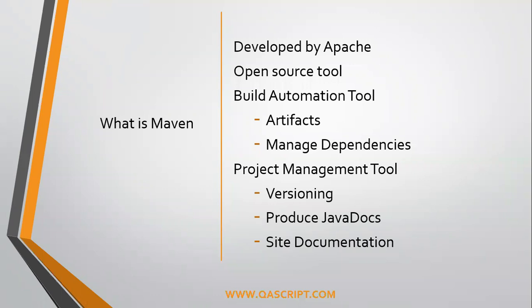Maven was developed by the Apache Foundation and it was an advanced tool built on top of Ant. Ant was the first build tool developed by Apache, and then they developed Maven, which is much more advanced and has a lot of features which are not in Ant. Importantly, it's an open source tool and is freely available — all the plugins are built by different online communities.